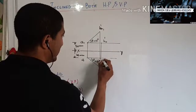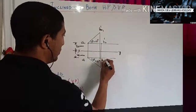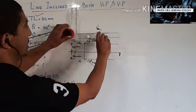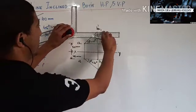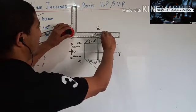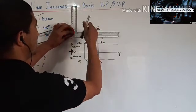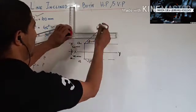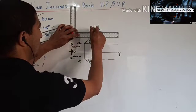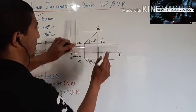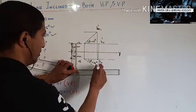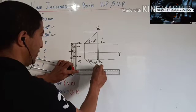Next I need to draw the locus line of B'1.